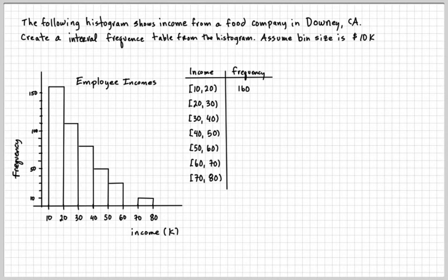So 160 is the first bar. Then the second bar goes up to 110. Then the next bar goes up to 80. Here's 50, 60, 70, 80. Next one is 50, 30. Then this is zero. And then over here, as you can see, is 10. Pretty straightforward.